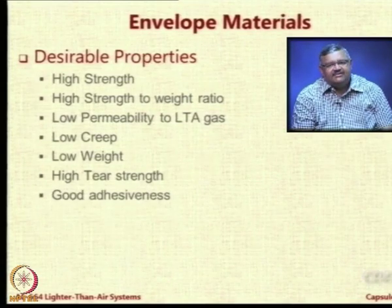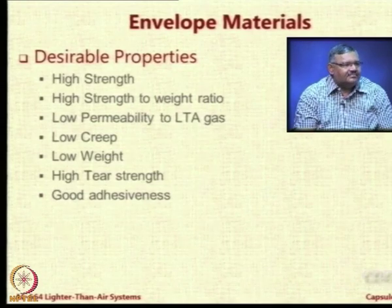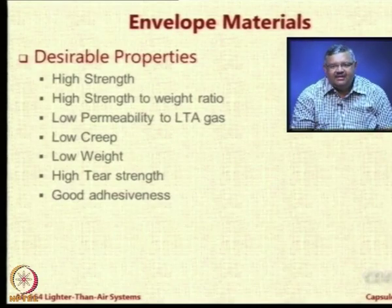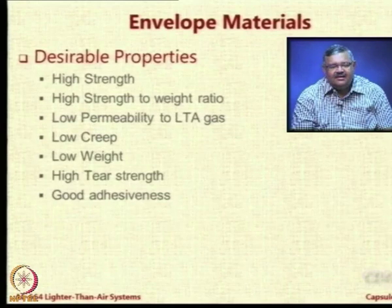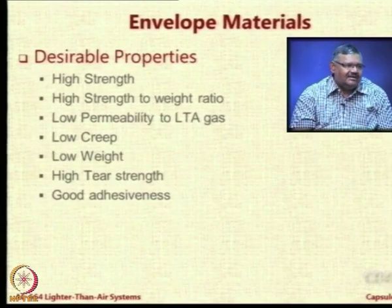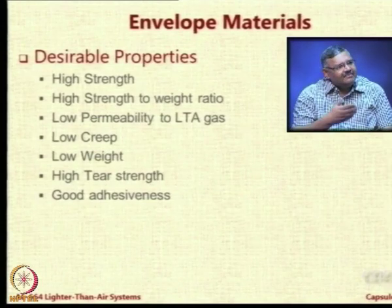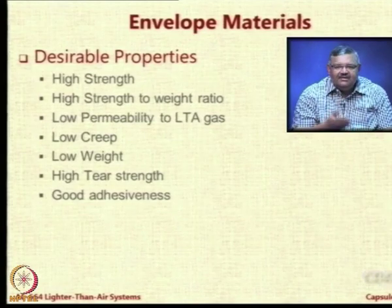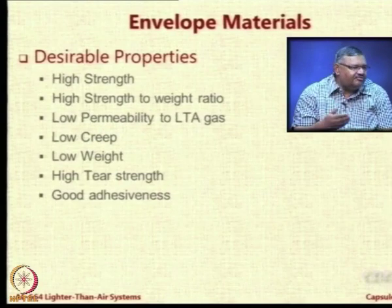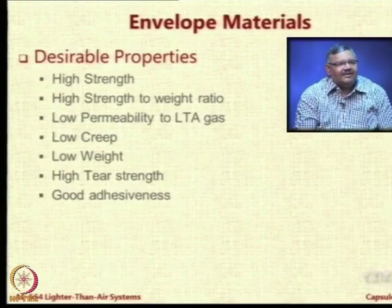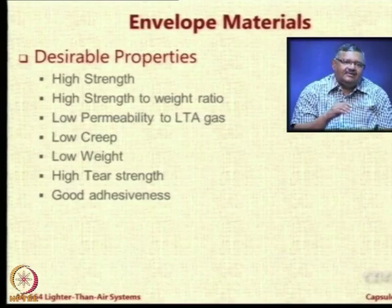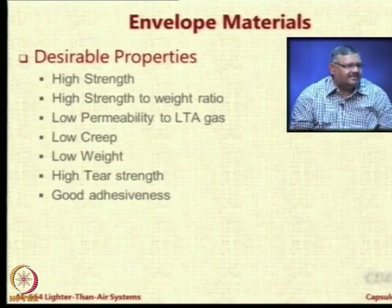Another property is good adhesiveness. In modern fabrics, the method of joining envelope material uses adhesives. The Japanese have made tremendous progress in this area, developing special silicone adhesives which are extremely long-lasting and provide very good strength. Certain materials may not be easy to join by adhesives, so if adhesives are to be used — which will be the case in most future applications — the fabric must allow itself to be adhered to other fabrics.